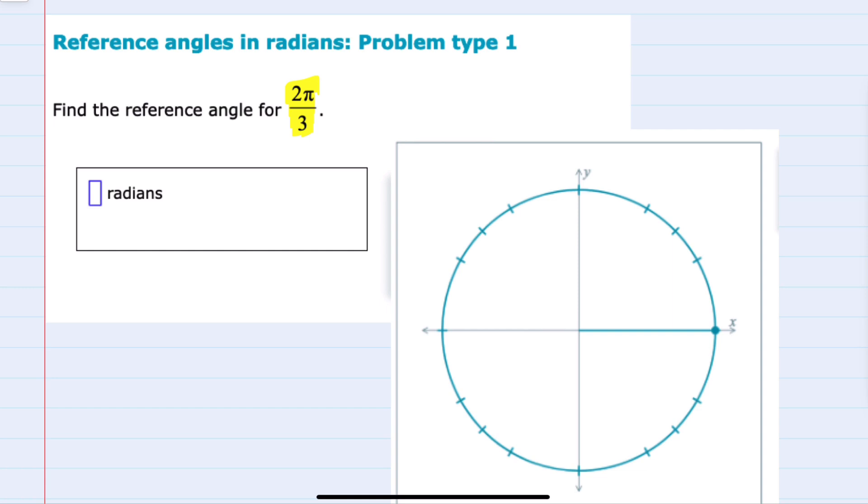by indicating where 2π/3 falls on our unit circle. 2π/3 is one of those standard measures on the unit circle, and I find it helpful to recreate some of those standard measures by just remembering the patterns.